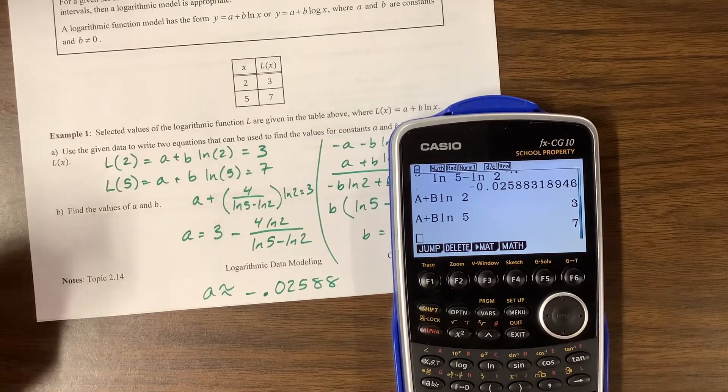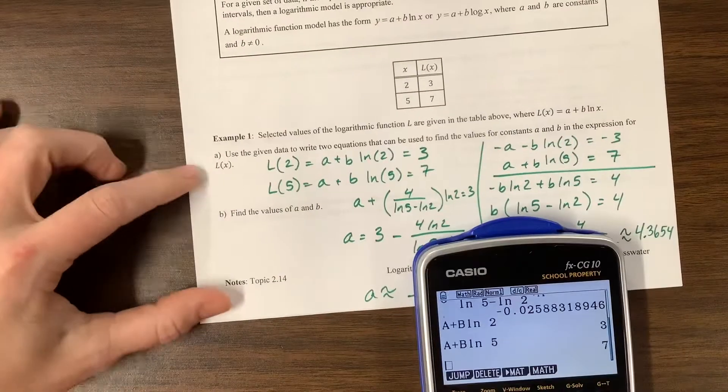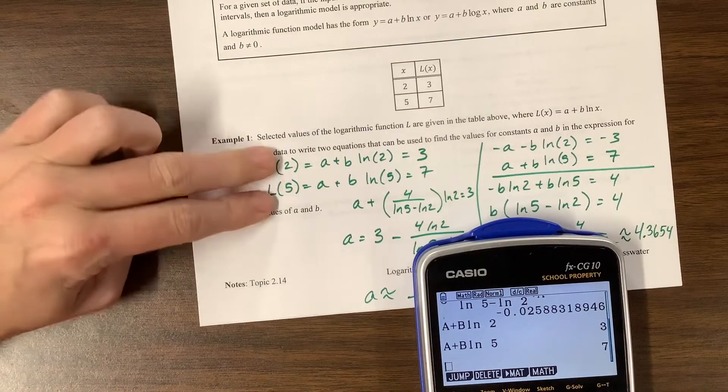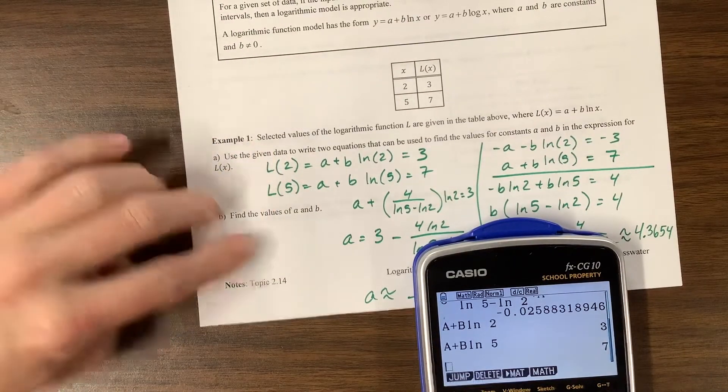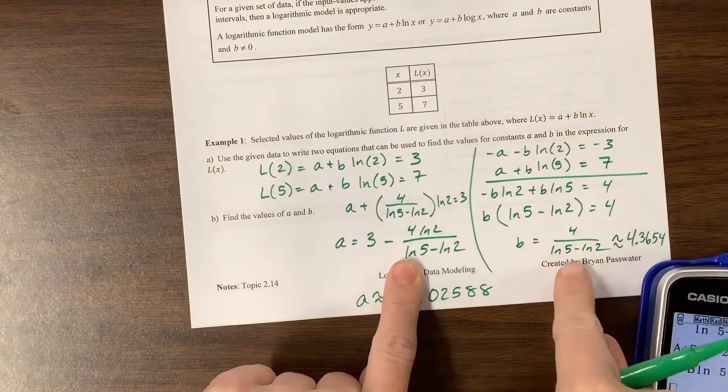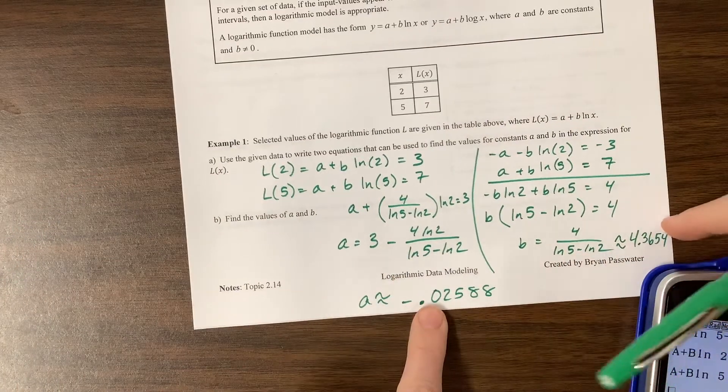I think we've answered the question. Given the data, write two equations, which we did. Find the values of A and B. We found both the exact values, and then we found the approximate.